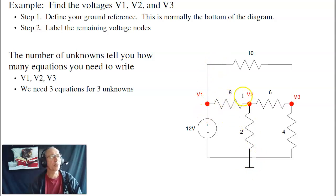Then define and label the different nodes. Here's V1. This node I'll call V2. This node I'll call V3. I've got three unknowns, so I need to write three equations for three unknowns.